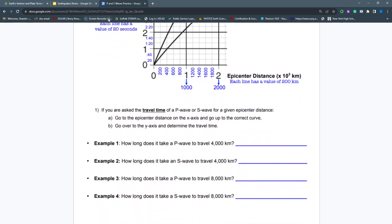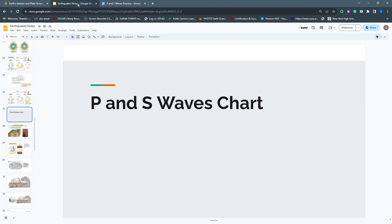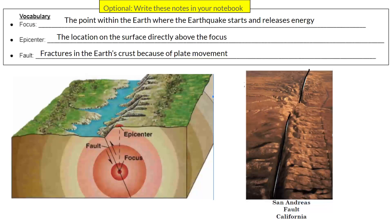Before we even start, let's talk about how we detect earthquakes and go over some vocabulary words. The focus is the point within the Earth where the earthquake starts and releases energy — it's inside the Earth where the earthquake starts and where the energy begins to spread.